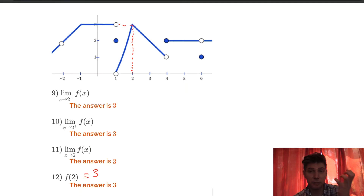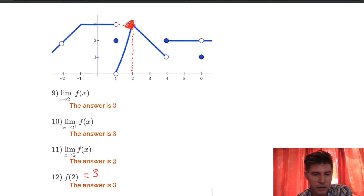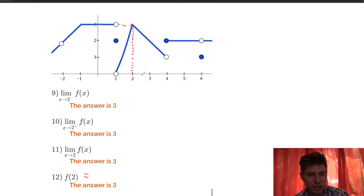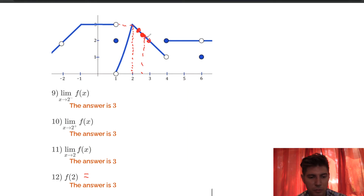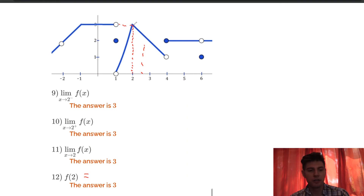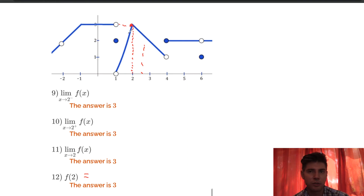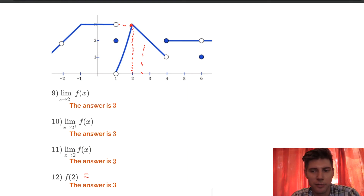One thing that might trip people up: they might say there's no dot here, so how do I know that's the function value? Well, each of these points has a function value — the function is defined right here. They just don't have room to fit all the dots because there are so many. It's a straight line, so you just find where that line intersects x equals 2.